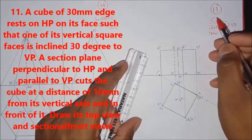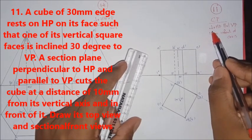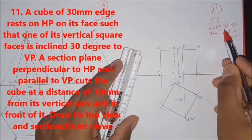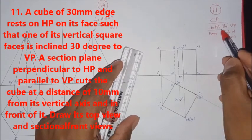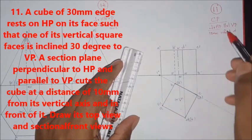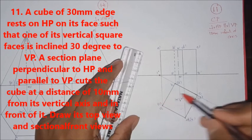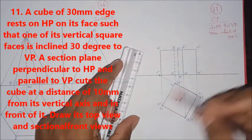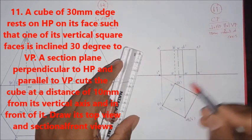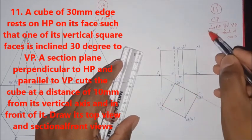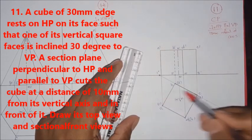This is the 11th question. The cutting line is perpendicular to HP and parallel to VP. Perpendicular to HP means you have to cut here, and parallel to VP means it is not in inclination. The xy line is parallel here. Perpendicular to HP means below xy, and parallel to VP means the xy line is parallel.